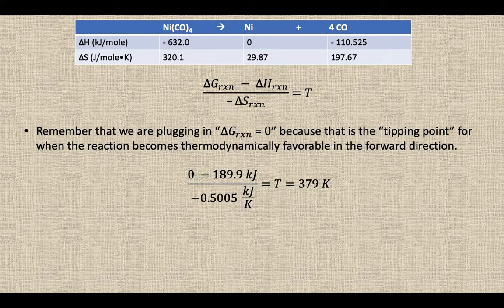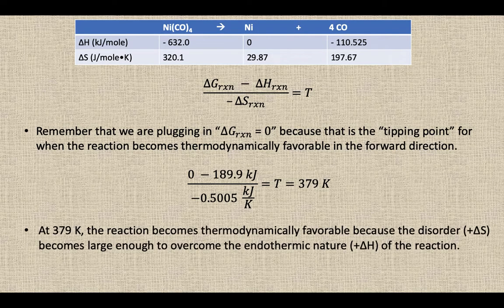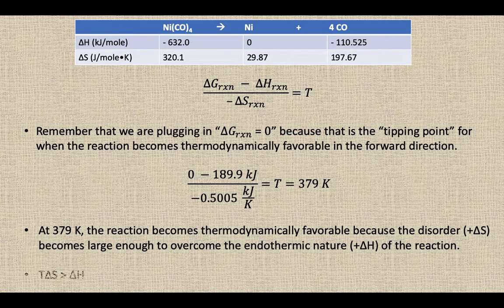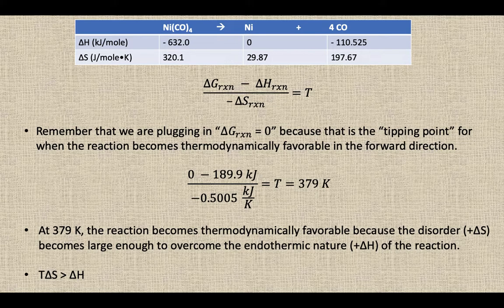At 379 Kelvin, the reaction becomes thermodynamically favorable because the disorder becomes large enough to overcome that endothermic nature of the reaction. We needed our T delta S to be greater than our delta H.